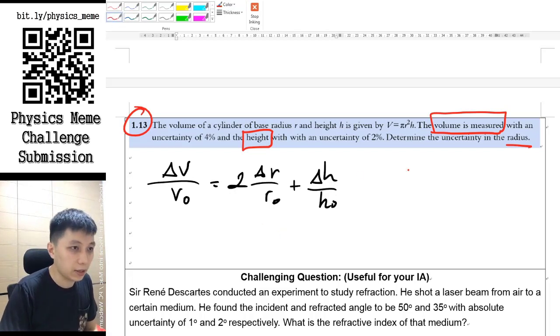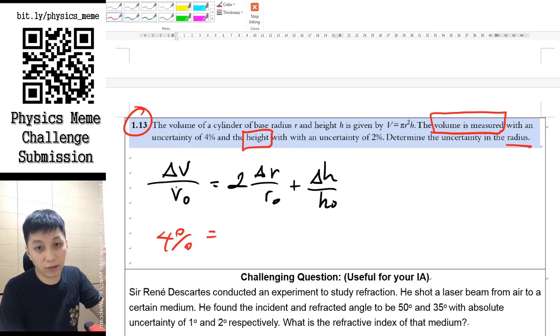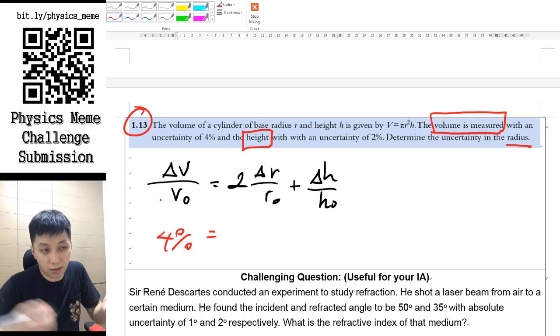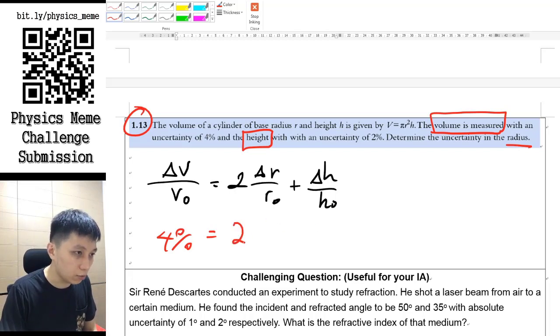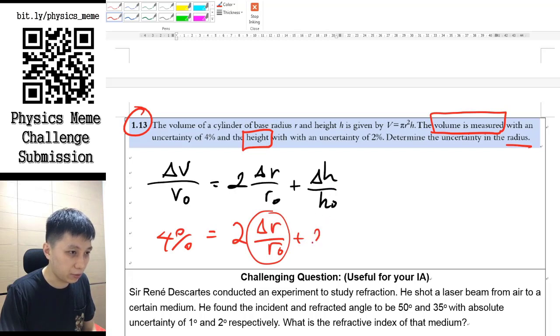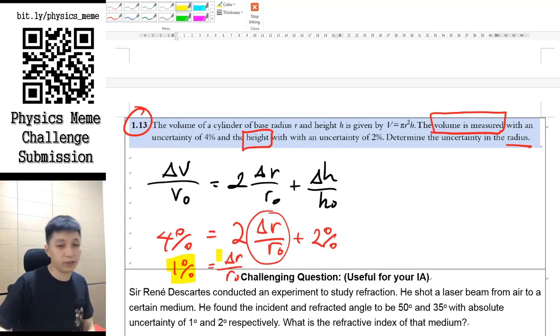So then in this case, people will say, hey, so volume is 4% because we don't know the specific delta v and v log, so we can just write 4% because this is basically the fractional uncertainty. That's the same as percentage uncertainty, you just have to times 100%. And so you will find, oh, then we'll keep this here because this is the unknown. And then h percentage error will be 2%. And therefore, if you solve this equation, you get 1% only, basically, for the r.